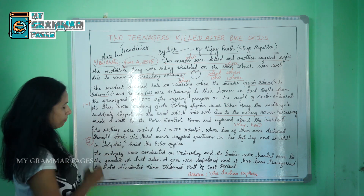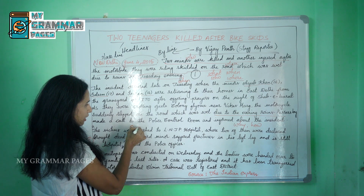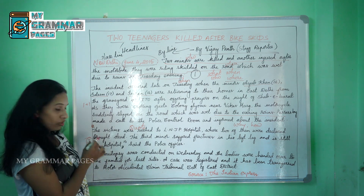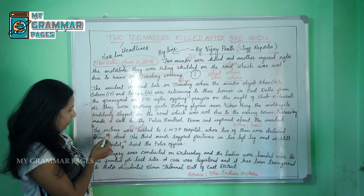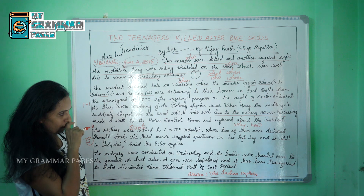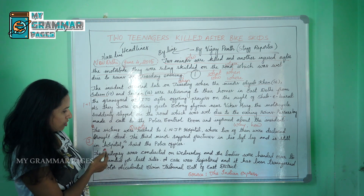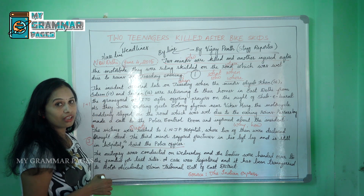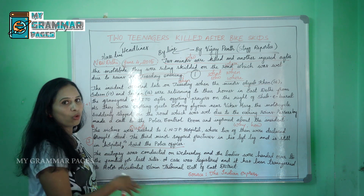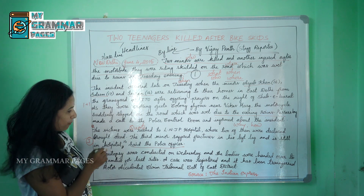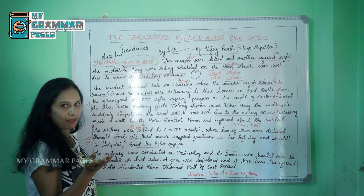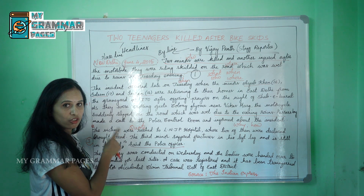The third paragraph, as discussed, is the quote paragraph, and it should begin with a quote as the first sentence. The quote here is: 'The victims were rushed to LMJP hospital, where two of them were declared dead. The third minor suffered fractures in his left leg and is still in hospital,' said the police officer. So we are taking the words of the police officer. The first line must begin with a quote, though you can prolong the paragraph if needed.